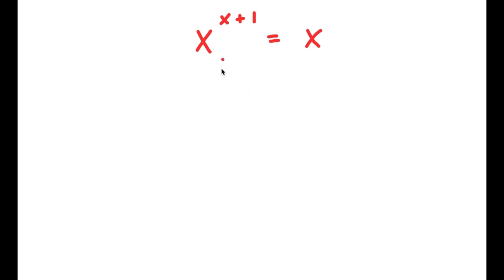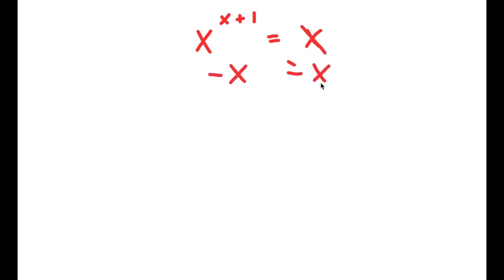In this problem, I have x to the power of x plus 1 is equal to x. To solve this, I'm going to start by subtracting x on both sides — those cancel out, and I'm left with x to the power of x plus 1 minus x is equal to 0.